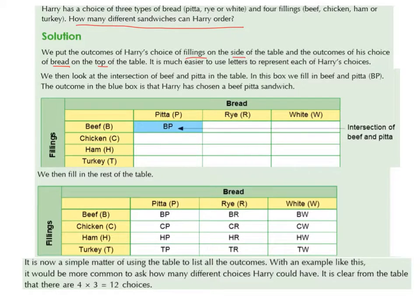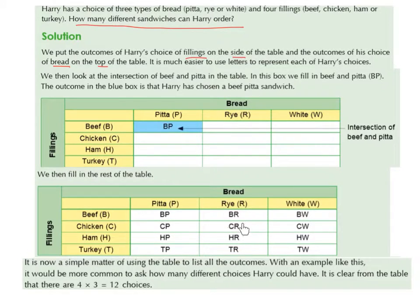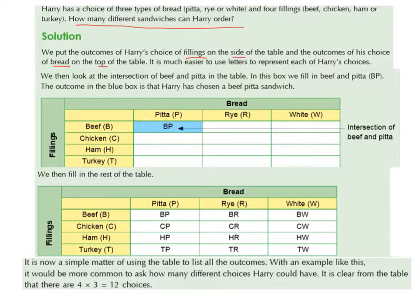We then fill in the rest of the table. Chicken and pitta gives CP; ham and pitta gives HP; turkey and pitta gives TP. Then beef and rye gives BR; chicken and rye gives CR; ham and rye gives HR; turkey and rye gives TR. Then beef and white gives BW; chicken and white gives CW; ham and white gives HW; and turkey and white gives TW.